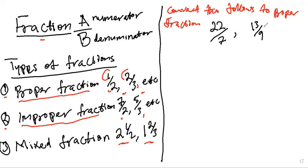These are not proper. So as you can see, these fractions are not normal — we've got to make them normal. We have to make this fraction proper. So this is 22 over seven and the other one is 13 over nine.